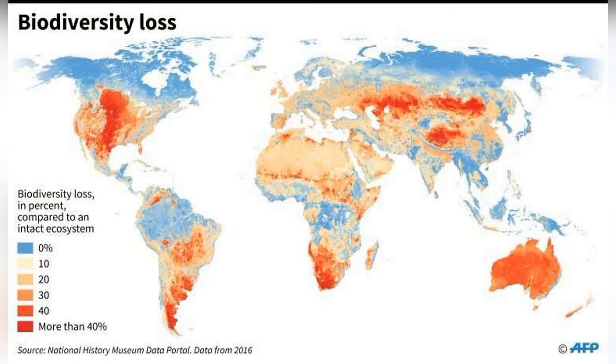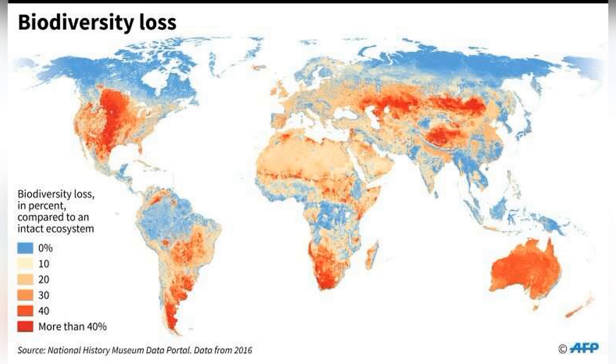According to the United Nations, around 1 million animal and plant species are currently threatened with extinction, many within decades — more than ever before in human history. The average abundance of native species in most major land-based habitats has fallen by at least 20%, mostly since 1900. We are losing wetlands, woods, forests, and jungles at an unprecedented rate.